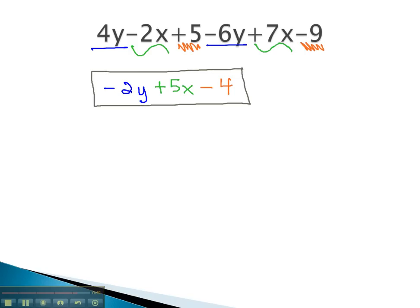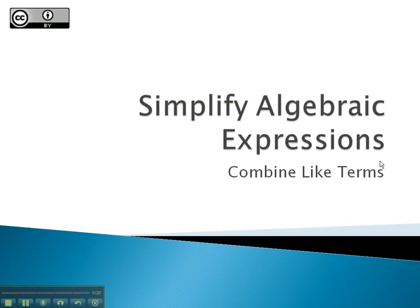We cannot combine the -2, 5, and -4 because they are not like terms. The variables do not match. This is our solution. As we simplify our algebraic expressions, combining like terms when the variables and exponents match will help us achieve our solution.